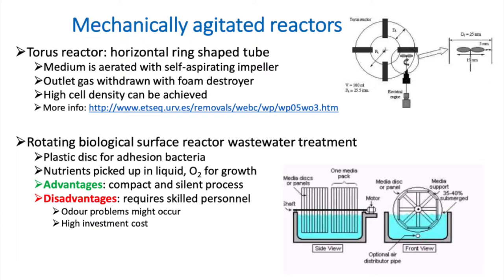The second example relates especially to wastewater treatment, where you would use a rotating disc reactor. Plastic discs allow bacteria to stick to them well; the disc rotates and scoops up nutrient-containing media from the liquid. There is then a period where organisms are without oxygen but are allowed to grow, before going in for a second round to pick up more nutrients. This design requires relatively less reactor volume, but it requires very trained personnel, as does the torus-shaped reactor.